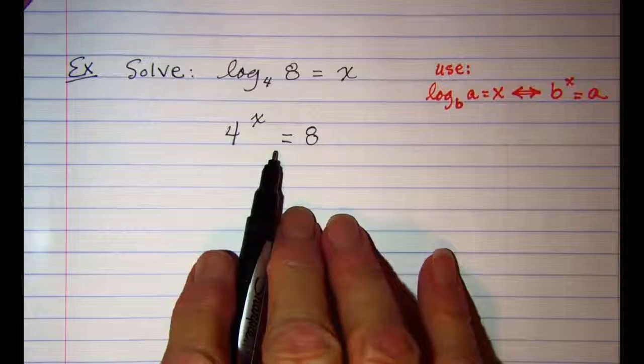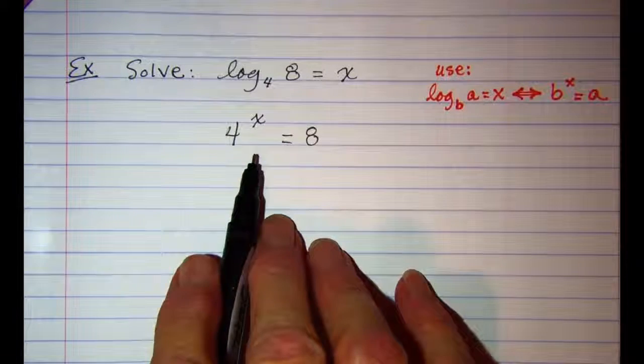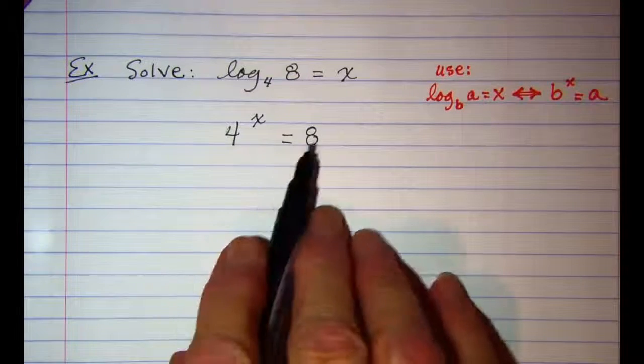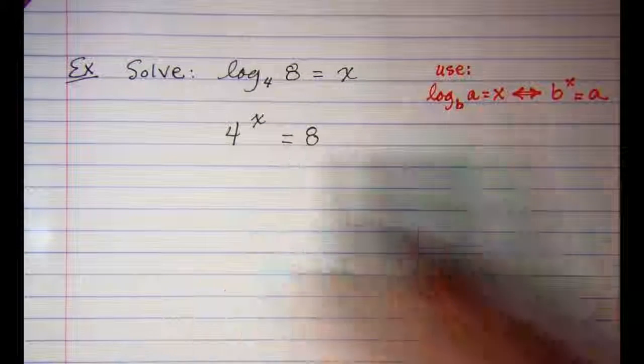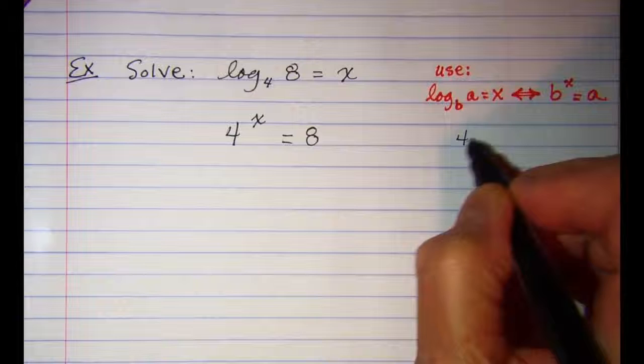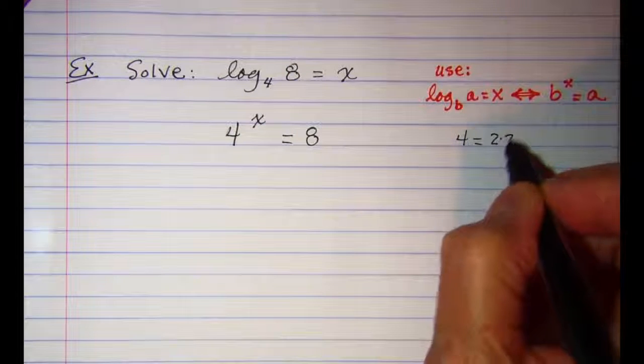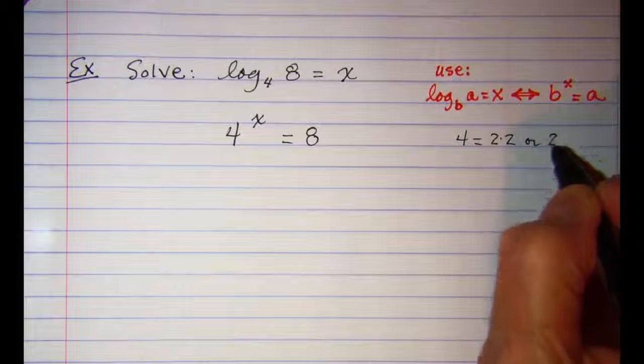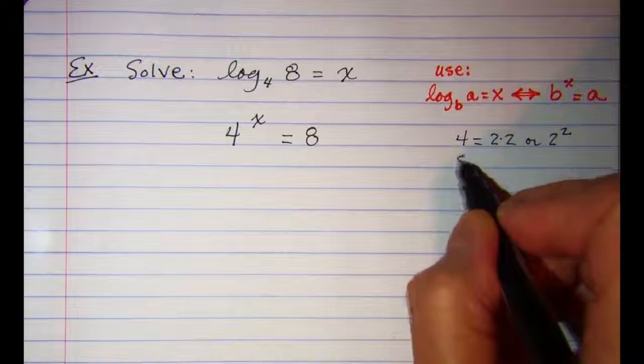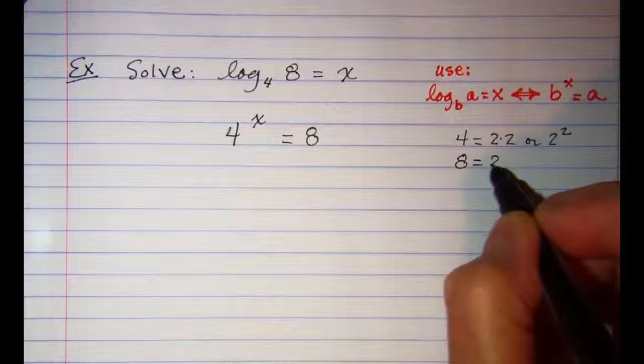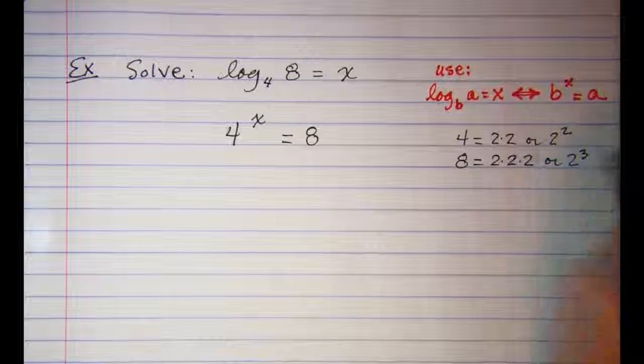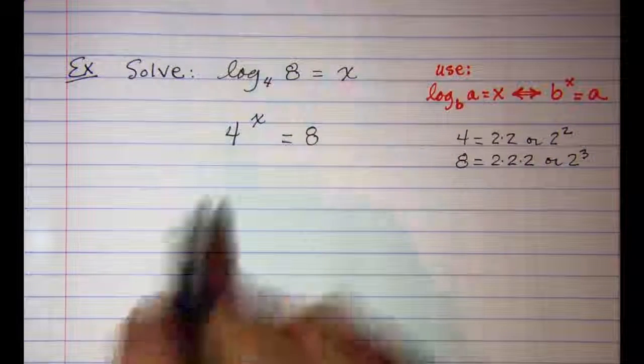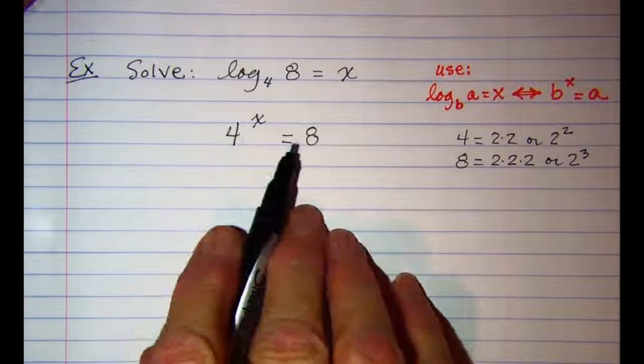Now in this one, just like the previous one, we'd like to get our bases the same. I can change both of these so that they have a base of 2. 4 is 2 times 2, or 2 squared, and 8 is 2 times 2 times 2 times 2, or 2 cubed. So I can change both of these numbers so that they have a base of 2.